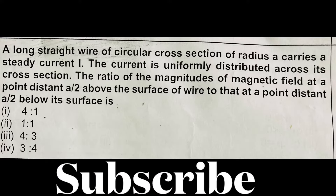A long straight wire of circular cross-section of radius A carries a steady current I. The current is uniformly distributed across its cross-section. The ratio of magnitude of magnetic field at a point distance A/2 above the surface of the wire to that at a point distance A/2 below the surface is: option 1: 4 to 1, option 2: 1 to 1, option 3: 4 to 3, option 4: 3 to 4.